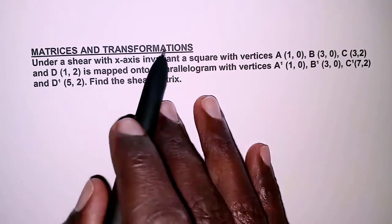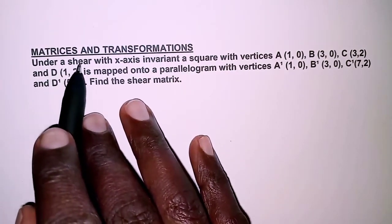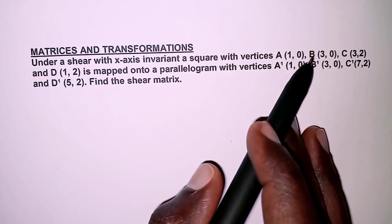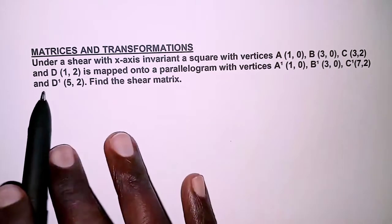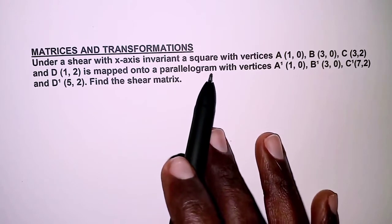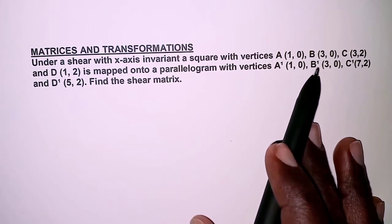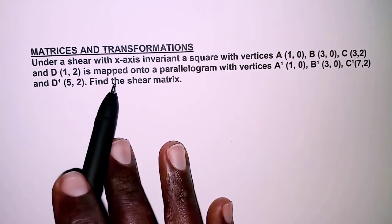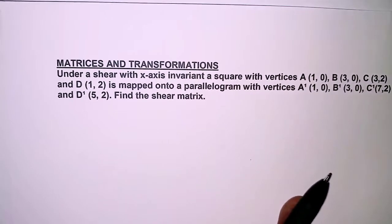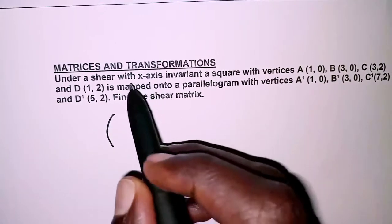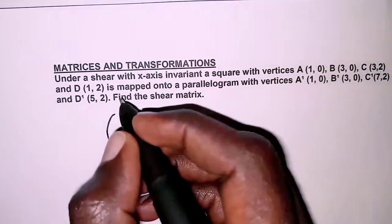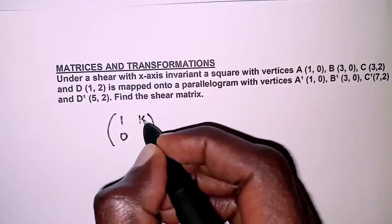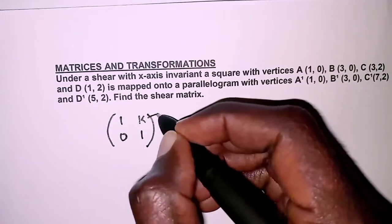The question is on matrices and transformations. A shear with x-axis invariant maps a square with vertices A(1,0), B(3,0), C(3,2), and D(1,2) onto a parallelogram with vertices A(1,0), B(3,0), C(7,2), D(5,2). Find the shear matrix. For a shear with x-axis invariant, the matrix is represented as [1, 0; k, 1], where k is the shear factor.